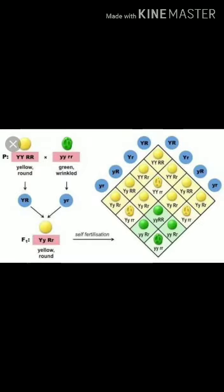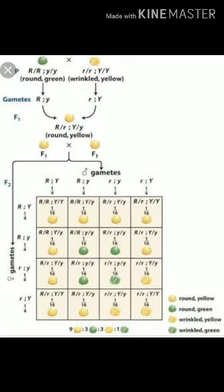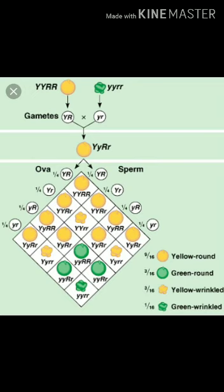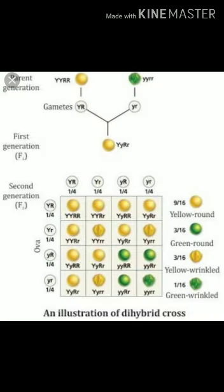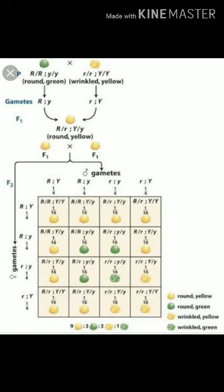In the F2 generation, the four alleles will assort out independently. The inheritance of seed color is independent of seed coat shape. During gamete formation, all alleles of both yellow and green seed color will be assorted independently from the shape of the seed coat — that is, round and wrinkled. As a result, along with the parental combinations of gametes, two new combinations will also be formed. You will see this in the diagram on your screen.